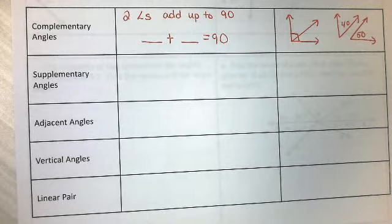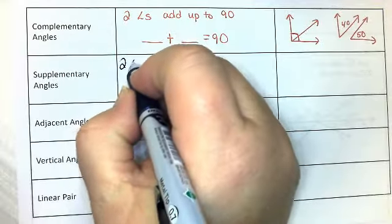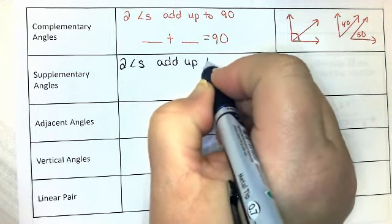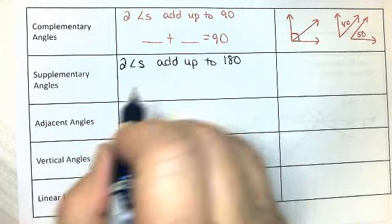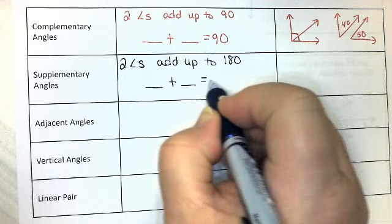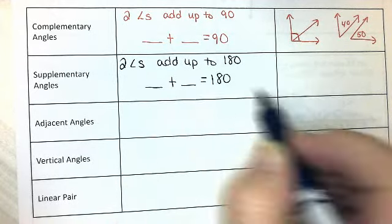The next type of angle are supplementary angles. Supplementary angles are two angles that add up to 180. Again, don't say two angles that equal 180. Be sure you're specific that they add up to 180.